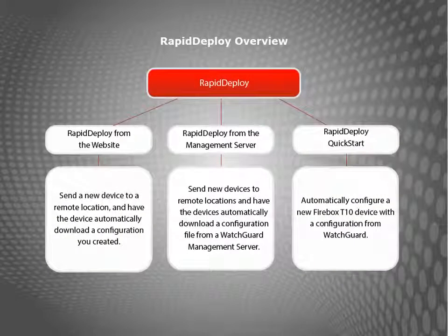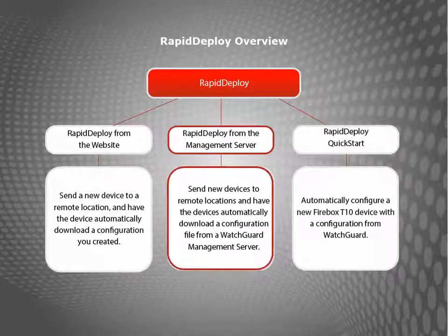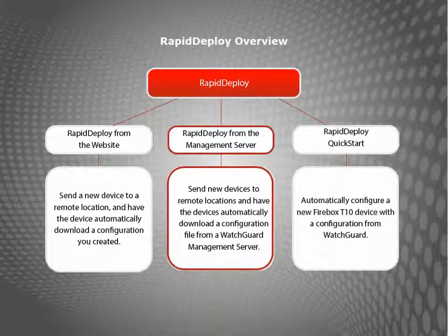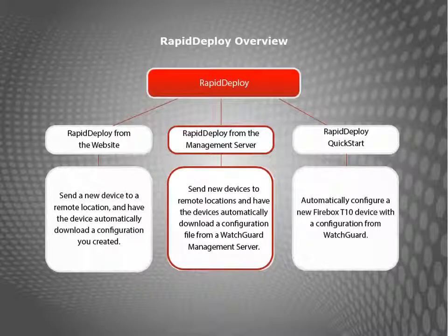There are three ways you can use Rapid Deploy. Maybe you use the centralized management feature set and have new remote sites you want to set up through your management server. You can register your management server with the WatchGuard Deployment Center and have WatchGuard create a Rapid Deploy configuration file for each device, so the devices know the IP address of your management server.